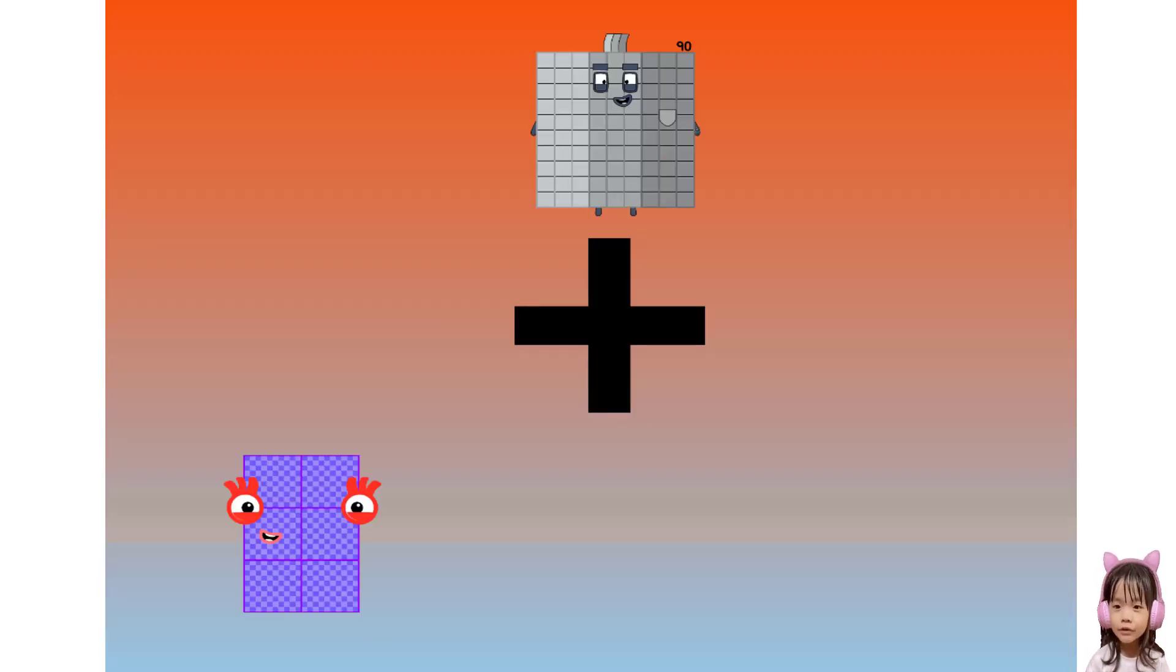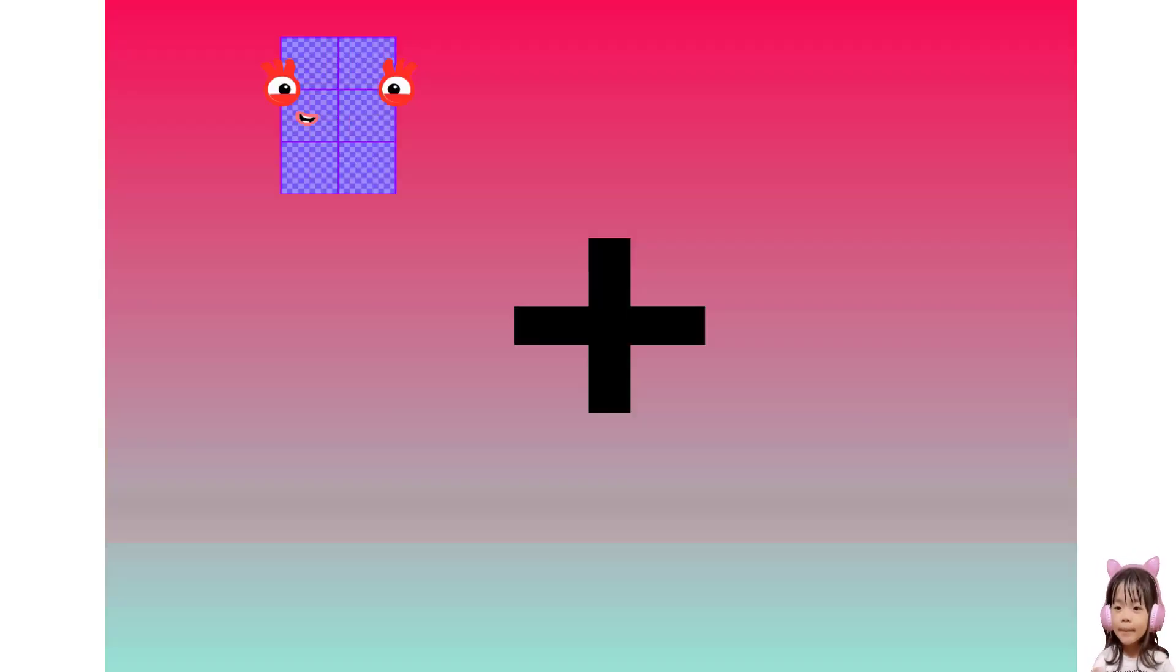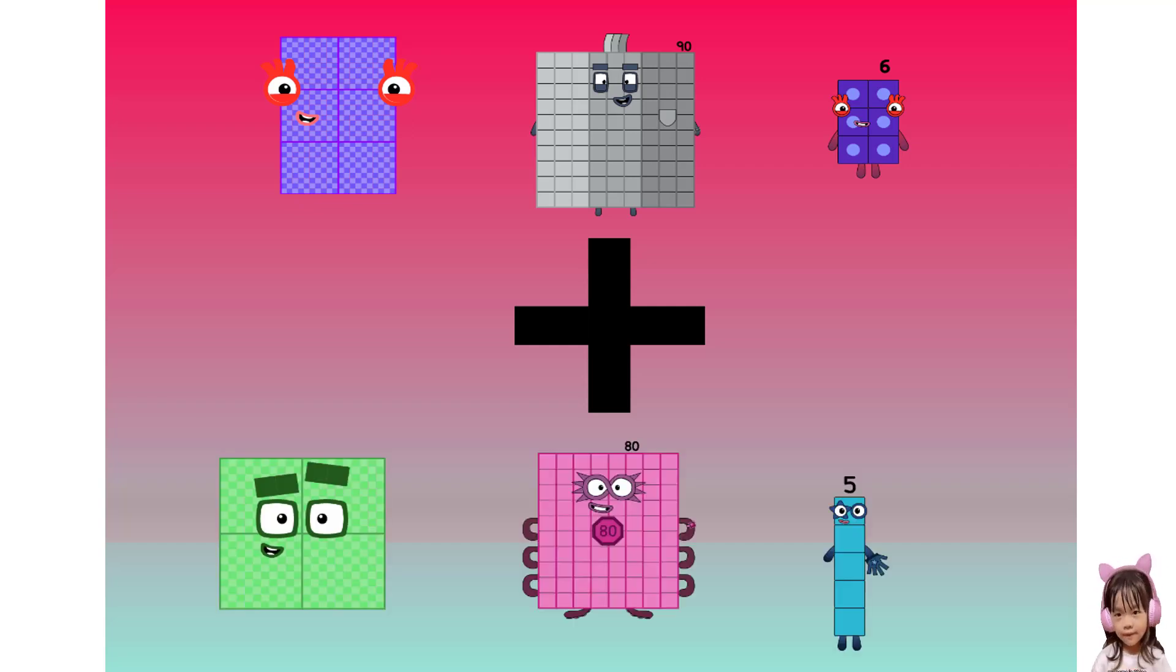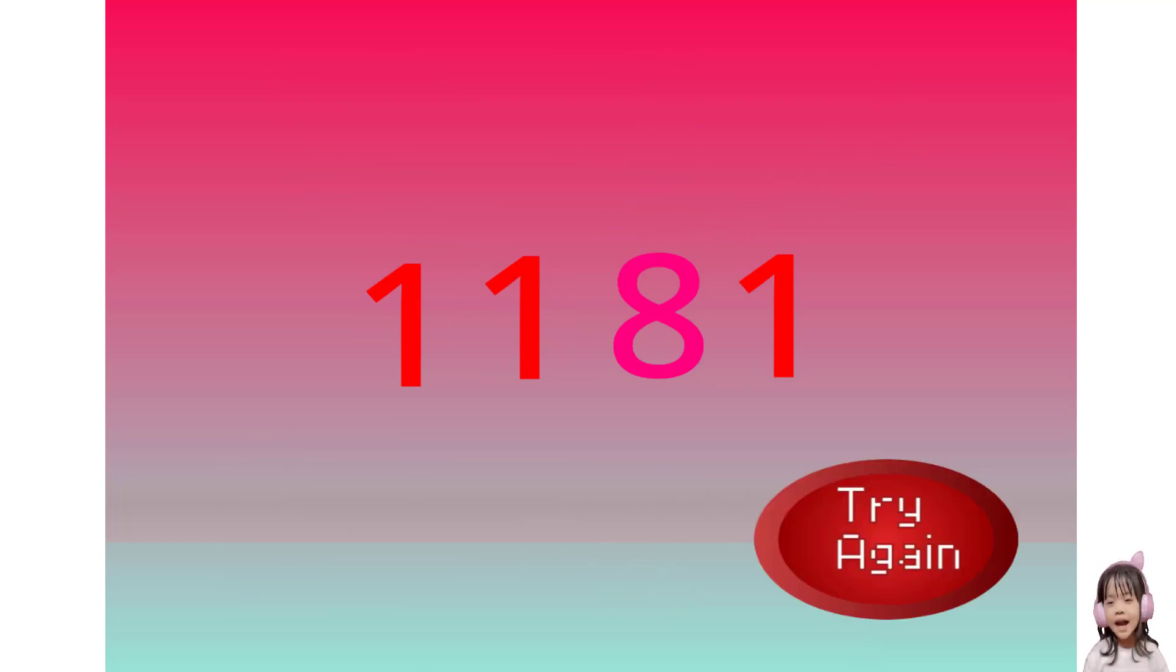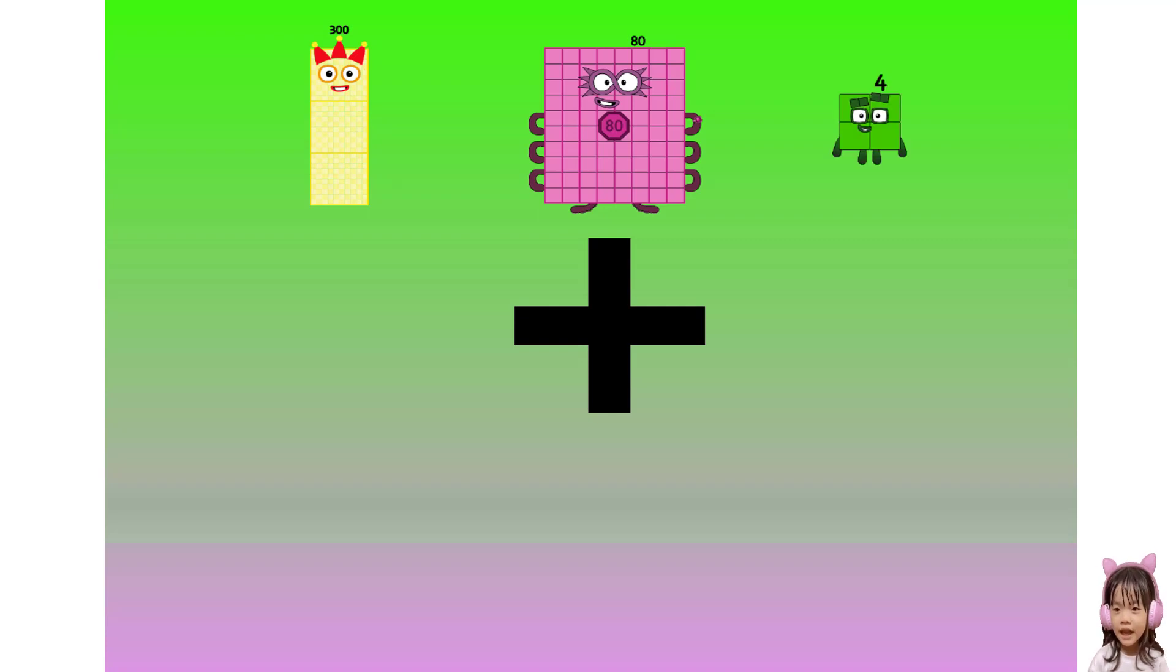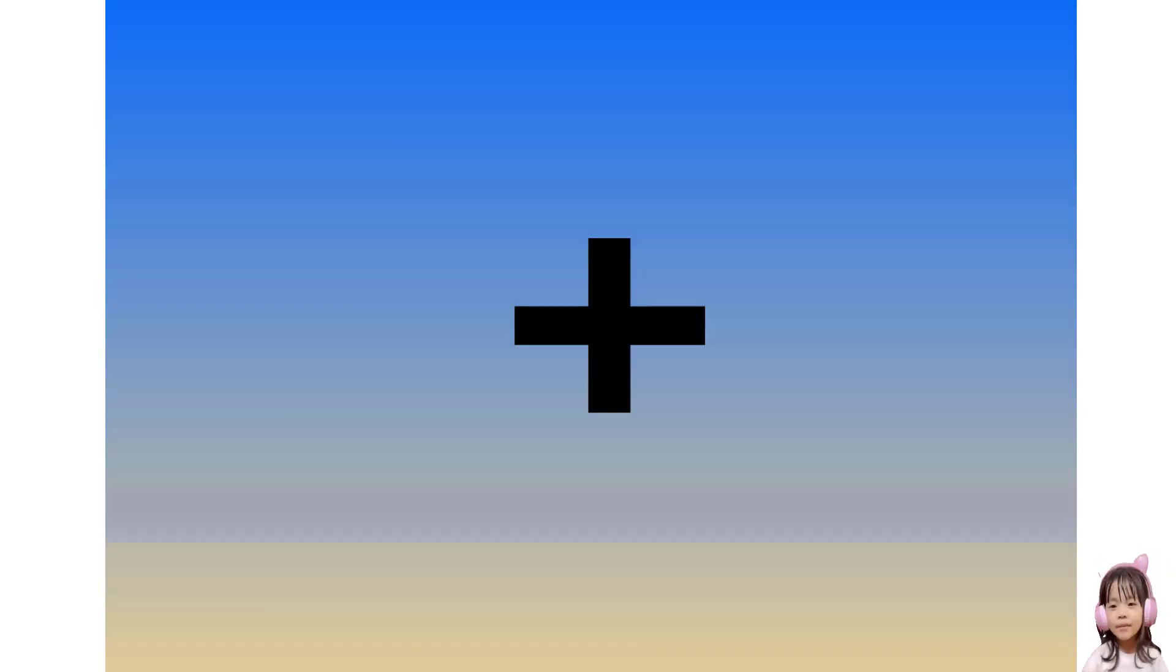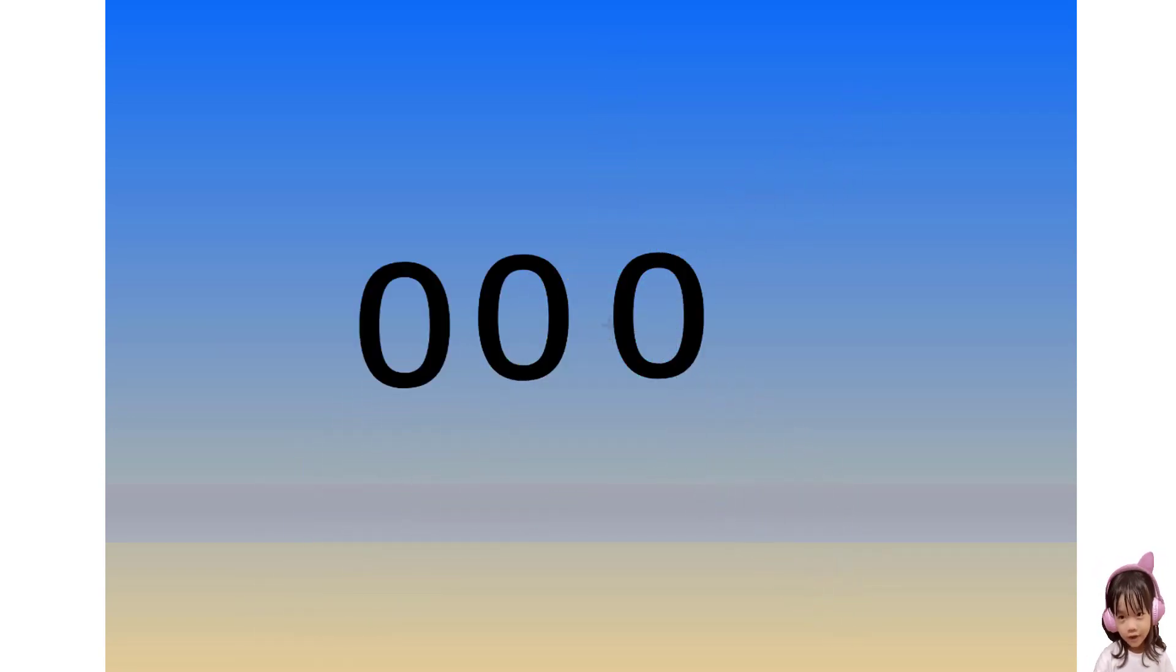90 plus 675 equals 765. 696 plus 485 equals 1,181. 384 plus 114 equals 498. 22 plus 705 equals 727.